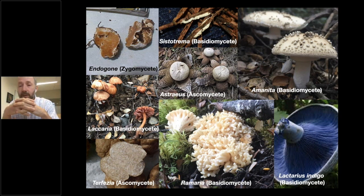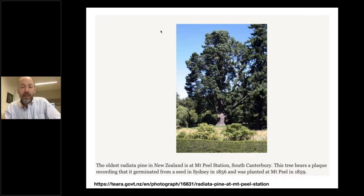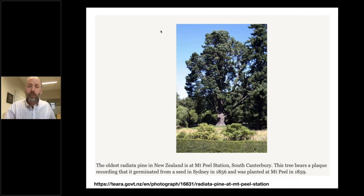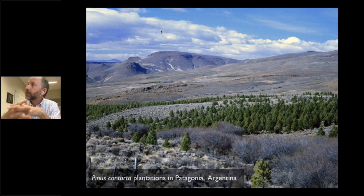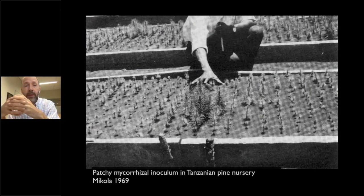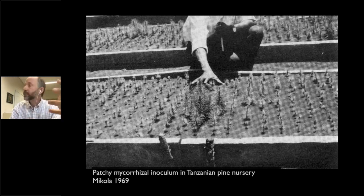That brings us up to the pine situation. Pines were first introduced to New Zealand sometime around the 1850s. In fact, there's a pine at Mount Peel Station that was planted in 1859 and is still there. Pines were introduced not just to New Zealand, but also to South America, South Africa, and Australia — in large plantings into grasslands. Around the world, when they brought pines in, they faced a problem: the pines were failing to grow. A few seedlings would have good growth and good color, but the vast majority were dying. It was actually that process of trying to introduce pines and failing to do so that led us to understand that fungi played a key role in the success of these plants.